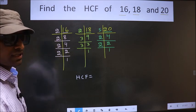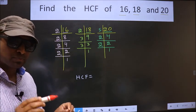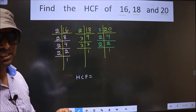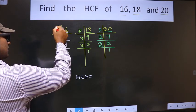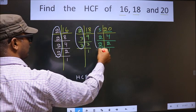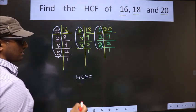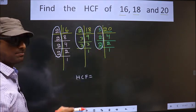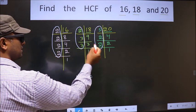HCF is the product of numbers that are present here and here and also here. So now we should find the numbers that are present in these 3 places.